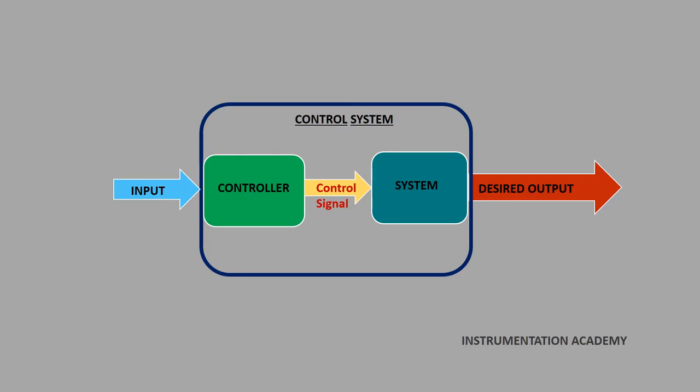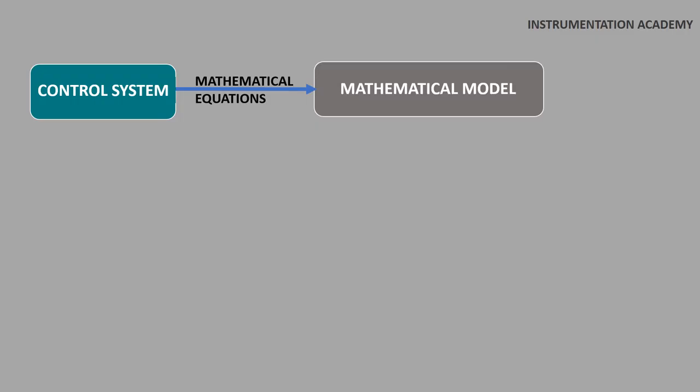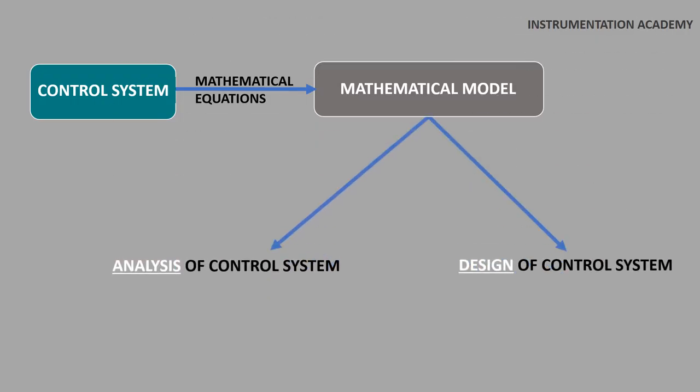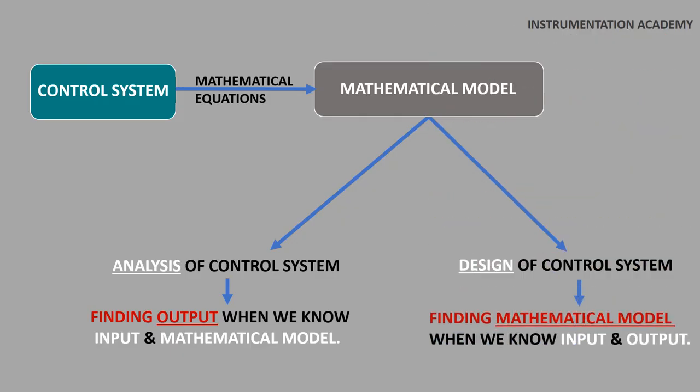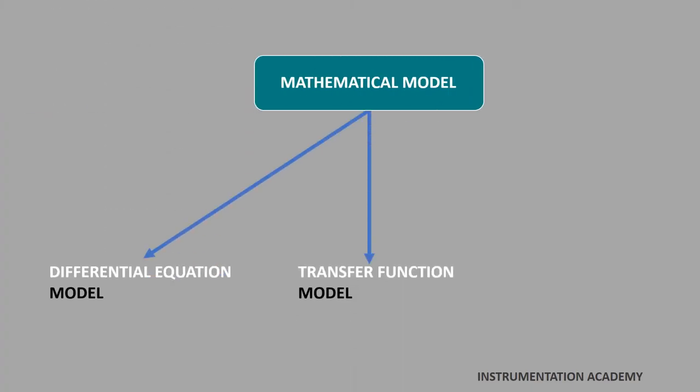For effectively controlling a process, we need to know how the input we are planning to use will affect the output of the process. For this, a mathematical model of the relationship between the chosen input and the output of the process is made. The control system can be represented with a set of mathematical equations known as mathematical model. These models are useful for analysis and design of control systems. Analysis of a control system means finding the output when we know the input and the mathematical model. Design of control system means finding the mathematical model when we know the input and the output. Most commonly used mathematical models are differential equation model, transfer function model, and state space model.